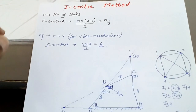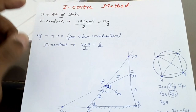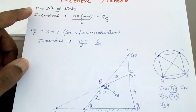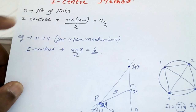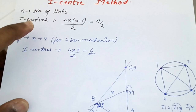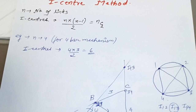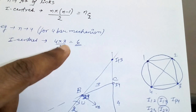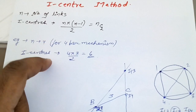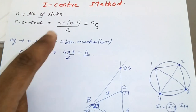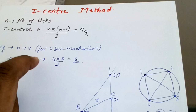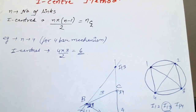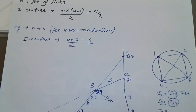Starting with the I-center method: let n be the number of links, so the number of I-centers will be nC2, that is n(n−1)/2. For example, in a 4-bar mechanism, the number of links is 4, so number of I-centers = 4×3/2 = 6.